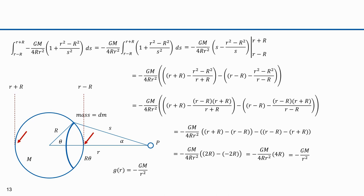This is how Newton proved that if you're outside a spherical shell of mass M, the force equation is the same as if all the mass were located at a point at the center of the sphere. From that he inferred the same would be true for concentric shells, and so the gravitational force exerted by a solid sphere can be treated as if exerted by a point mass at its center.